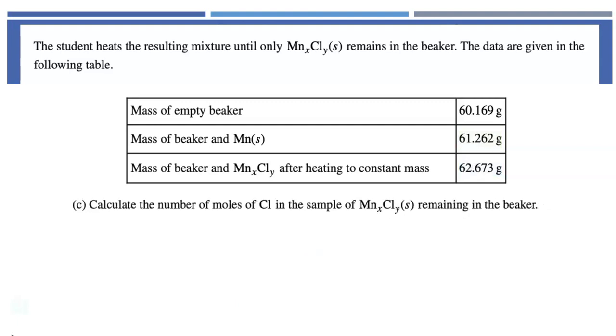Part C says, calculate the number of moles of chlorine in the sample of the solid salt that you made. You're going to have to use your answer from part B, which was 1.411 grams. Since it's grams and we want to convert it to moles, we're going to divide by the molar mass of chlorine. That gives us an answer of 0.03980 moles of chlorine. The answer should have four sig figs. We do need that trailing zero. This was also worth one point.